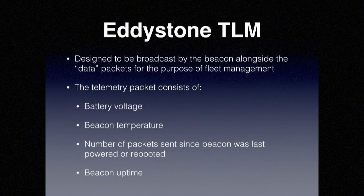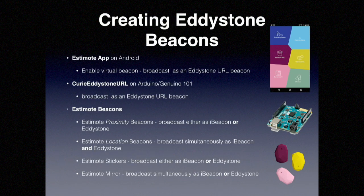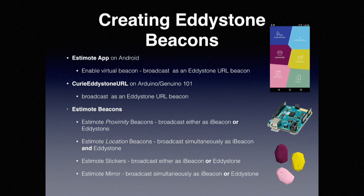The third Eddystone type is TLM — telemetry. It's designed to be broadcast by beacons alongside data packets. The telemetry packet contains battery voltage, temperature, the number of packets sent since last power-up, and beacon uptime. This is very good for maintenance purposes. To create Eddystone beacons for development: download the Estimote app on Android and turn on the beacon option — it broadcasts as an Eddystone URL beacon. Or buy an Arduino 101 and write a script to broadcast as an Eddystone beacon.